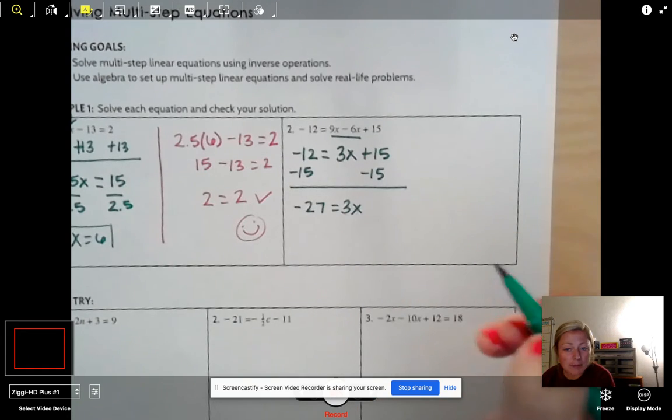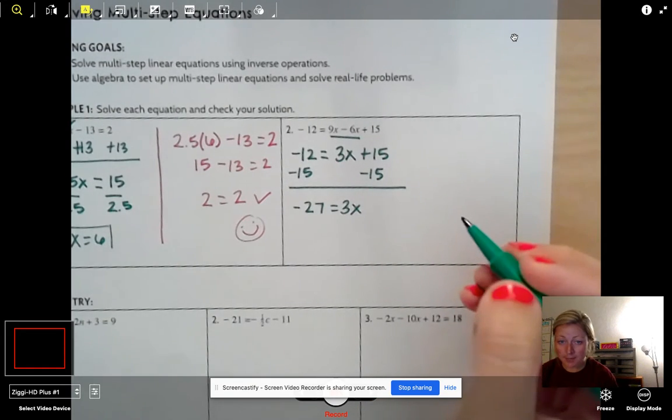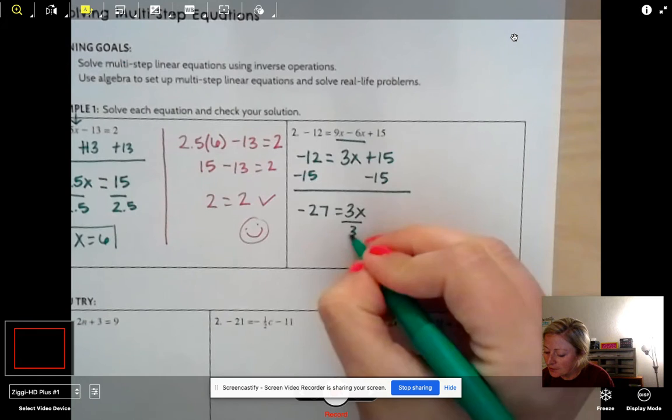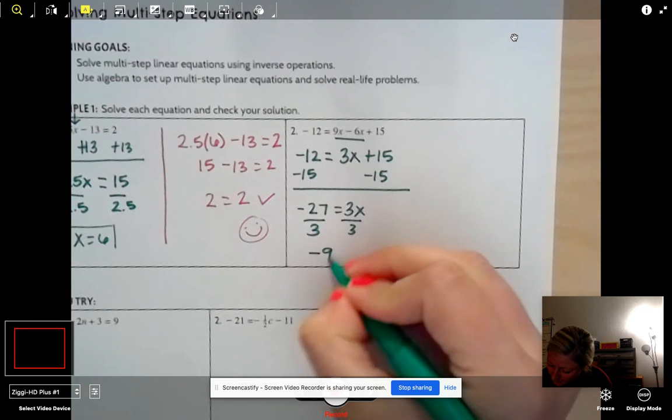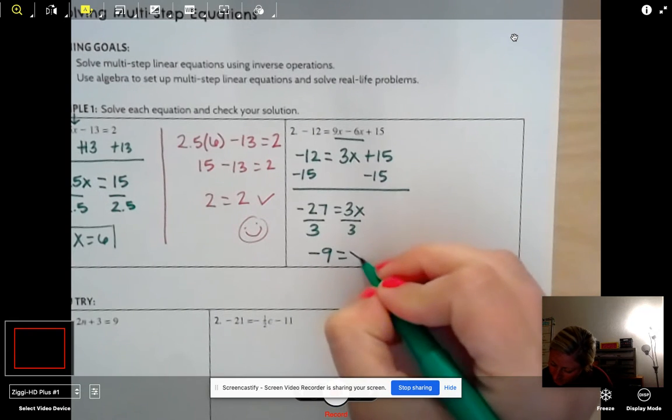Right now, I'm multiplying by 3. So what's the opposite of multiplying by 3? Well, we divide by 3. And now we just take negative 27 divided by 3 is negative 9 equals x.